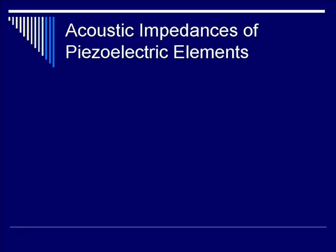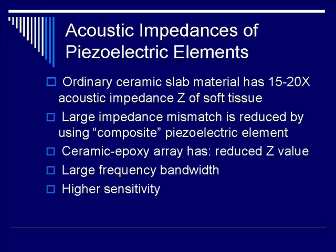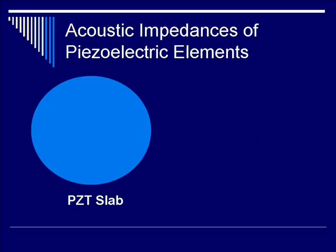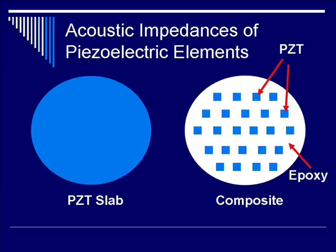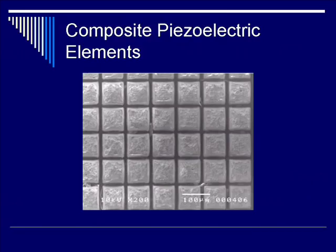Regarding acoustic impedances of piezoelectric elements: an ordinary ceramic slab has 15 to 20 times the acoustic impedance Z of soft tissue. This large impedance mismatch can be reduced by using a composite piezoelectric element, which consists of ceramic pillars surrounded by an epoxy array, resulting in a reduced Z value. It also provides a larger frequency bandwidth and higher sensitivity. A solid PZT slab has a Z of 30×10⁶ rayls, whereas composite material has a Z of only 10×10⁶ rayls. A micrograph shows an actual fabricated composite piezoelectric array consisting of multiple PZT pillars surrounded by insulation in the gaps.